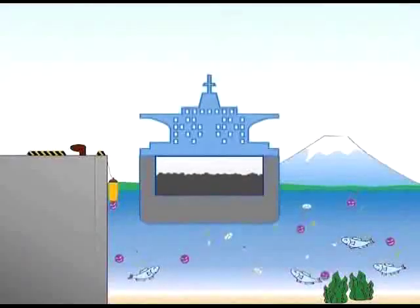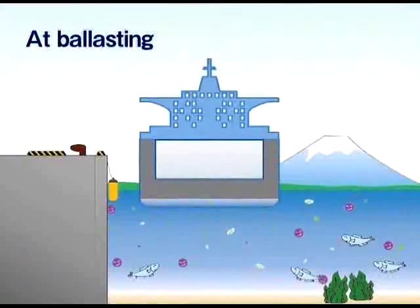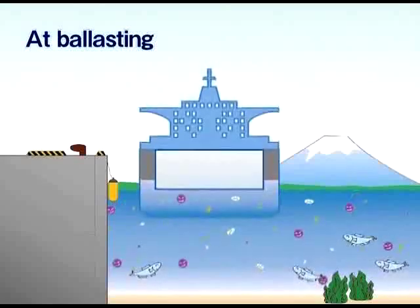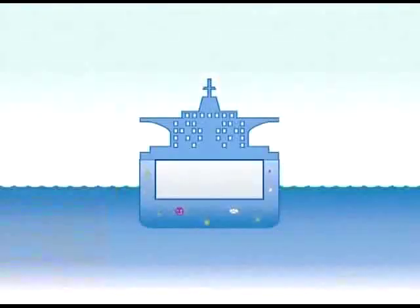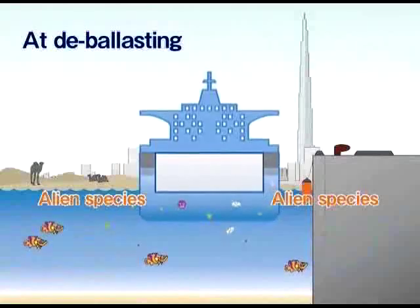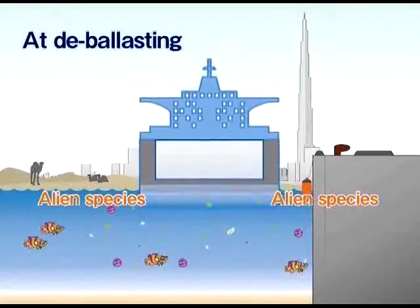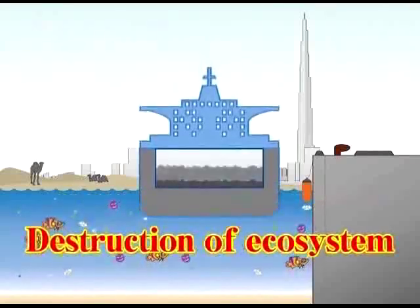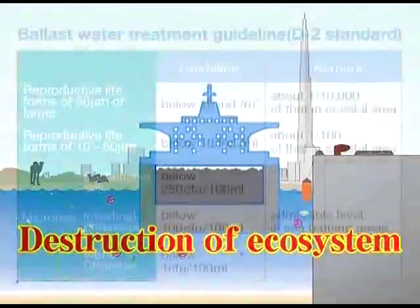Ballast water is seawater which is taken on by ships as weight in place of cargo. When a ship has unloaded its cargo, such as raw materials, and leaves port in an empty condition, it fills its ballast tanks with ballast water. When the ship takes on cargo at a port in another country, it discharges the ballast water. The problem is that marine organisms in the ballast water are discharged into different waters as alien species, which can cause destruction of the local ecosystem.